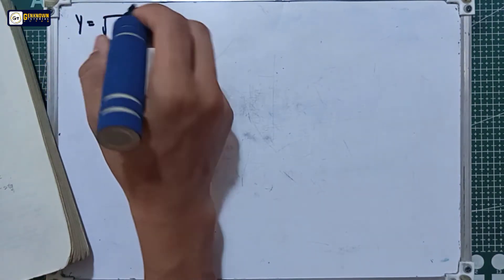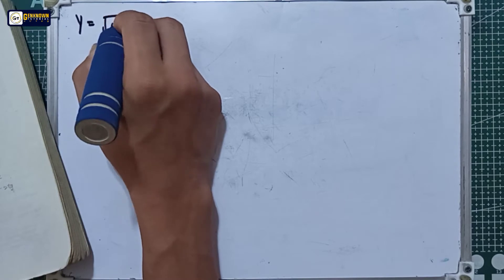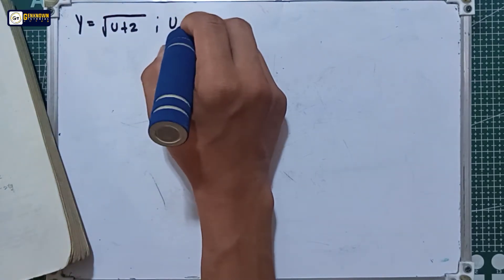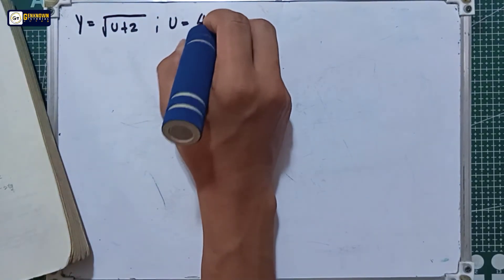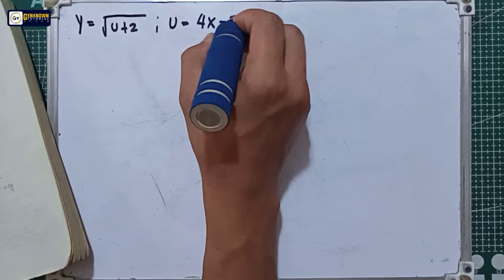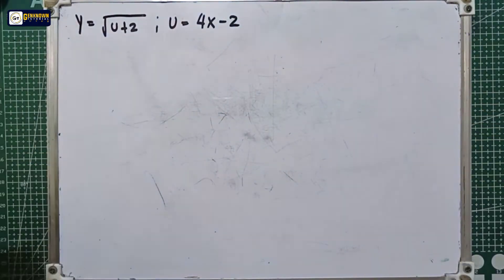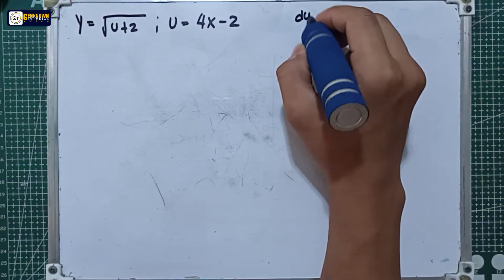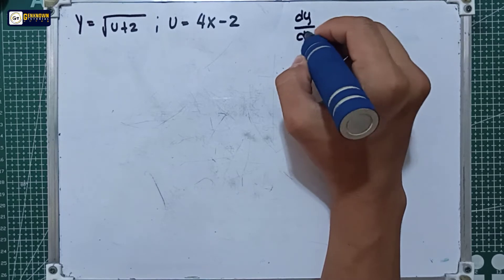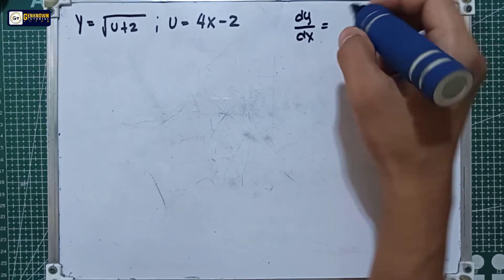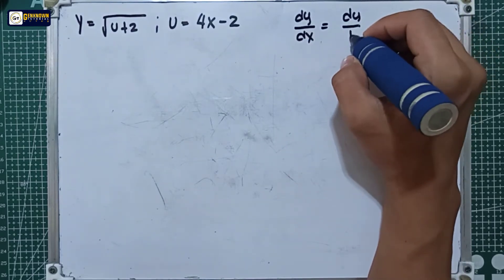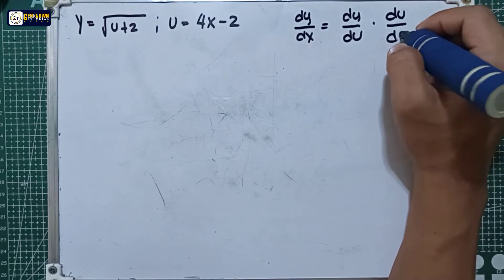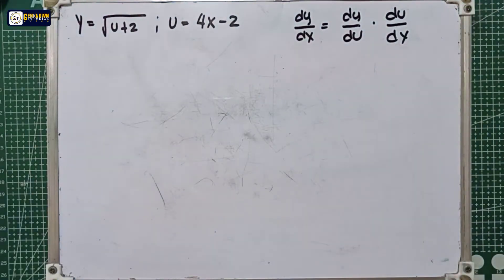Let me rewrite it: y is equal to the square root of u plus two, and u is equal to four x minus two. Remember the formula for chain rule: dy over dx is equal to dy over du multiplied by du over dx.